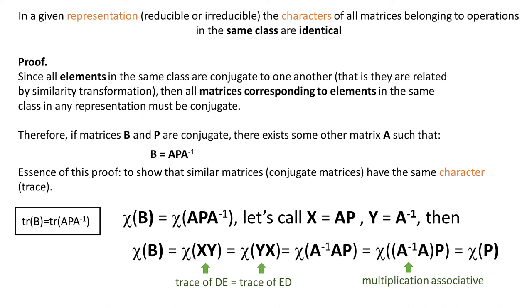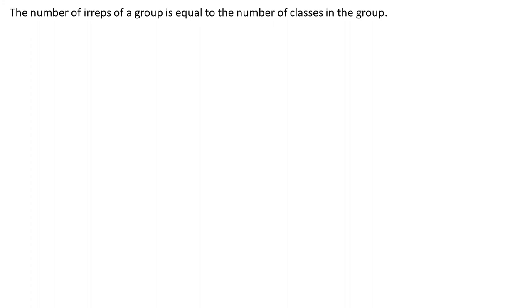Rule number five, the last one. The number of irreps of a group is equal to the number of classes in the group. This is slightly similar to the first rule in that the full proof is not given and we show the upper limit. There cannot be more irreps than classes.